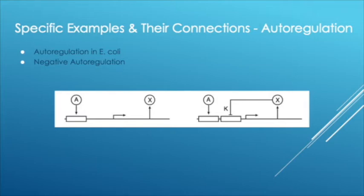Autoregulation, also known as self-regulation, is the simplest network motif, consisting of self-arrows, which are arrows that originate and end at the same node.